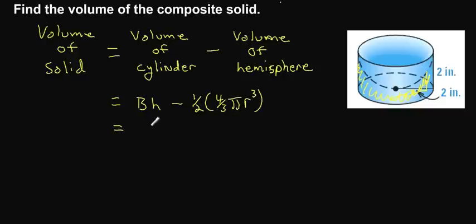Now, when we start plugging in, remember our base is pi r squared. So we've got pi times 2 squared times the height, which is 2, minus one half multiplied times four thirds times pi times 2 cubed.